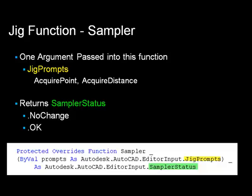The Sampler function returns the SamplerStatus enumeration. You need to determine the value of the SamplerStatus to return. If the location of the drag has not changed, you should return SamplerStatus.NoChange — doing this will stop the drag image from excessive flickering. Remember that these functions are continuously called during the drag. If there is a change in the location of the drag, you return SamplerStatus.OK.